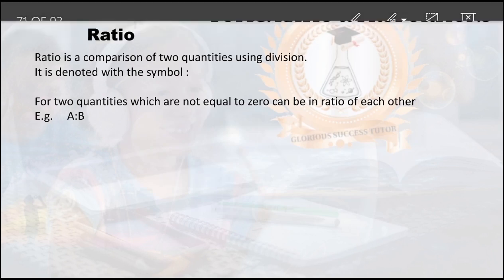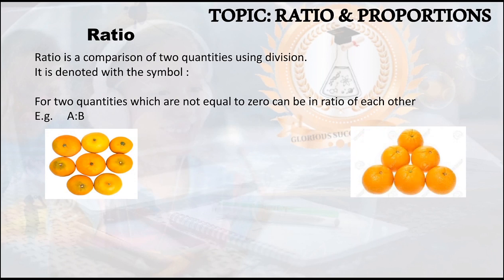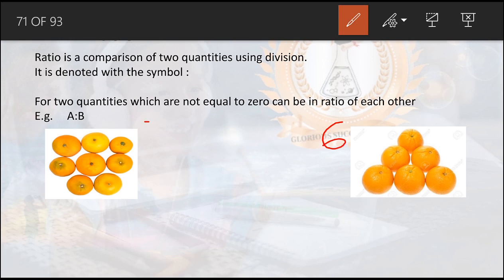Now take for instance I have two sets of oranges. The first set has eight oranges, and here I have six oranges. Now suppose I want to share the six oranges in the ratio four to two, and the eight oranges in the ratio four to four, and distribute them to four kids.